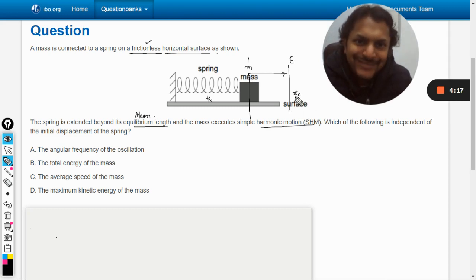Which of the following is independent of the initial displacement of the spring? What is the initial displacement? Isn't it the amplitude? Yes, of course. We just stretched it and let it go, so that initial displacement is the amplitude.